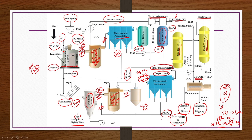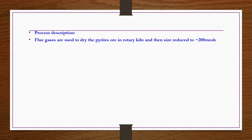This is the entire process for elemental sulphur production from iron pyrites. The four products are: elemental sulphur, sulphur dioxide (second product), iron oxide (third product), and electricity (fourth product). The process description notes that flue gases dry the pyrites ore in a rotary kiln, and the ore is size-reduced to 200 mesh size.